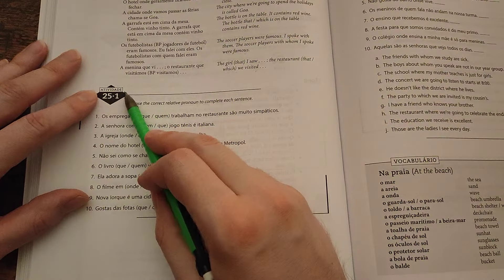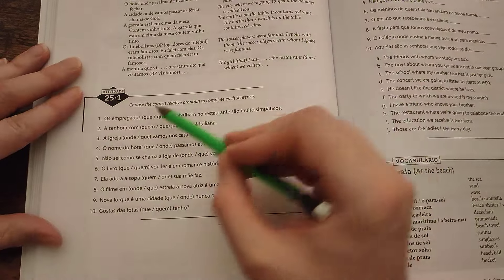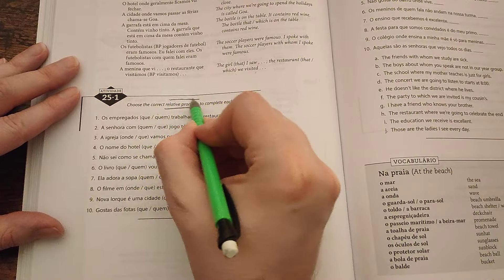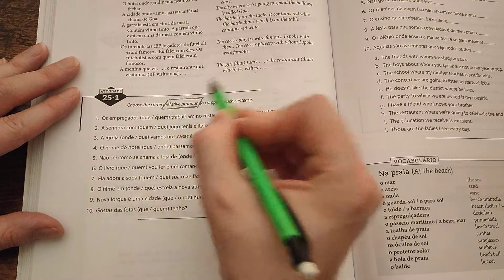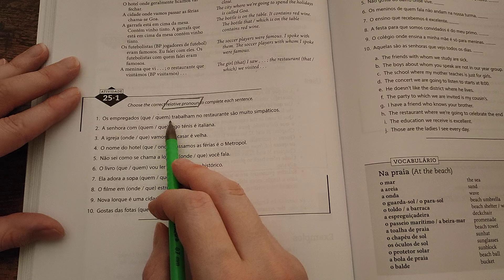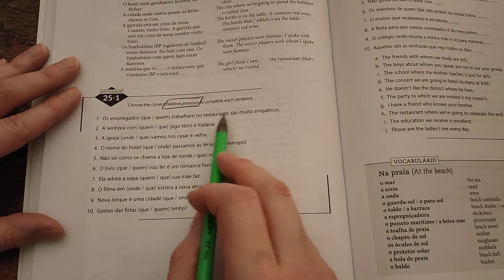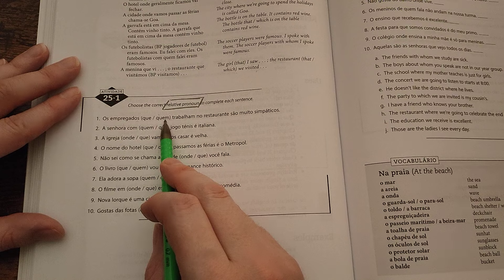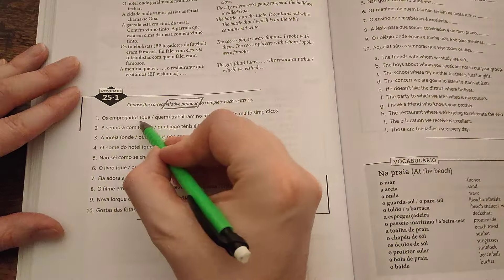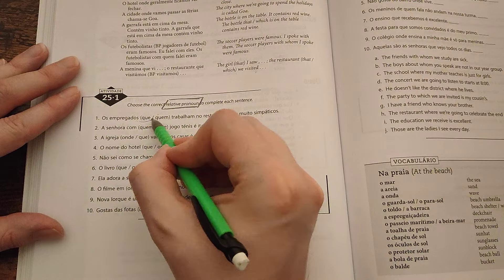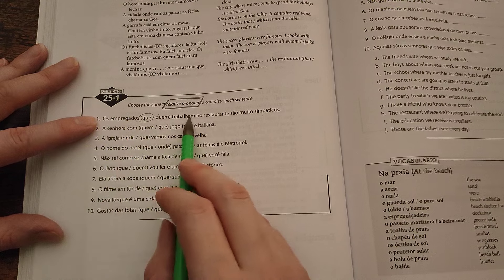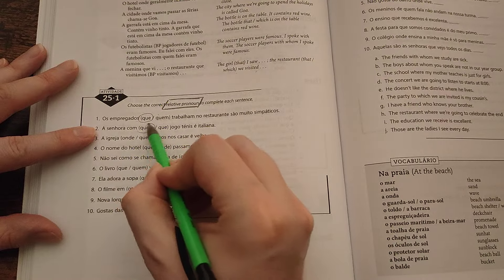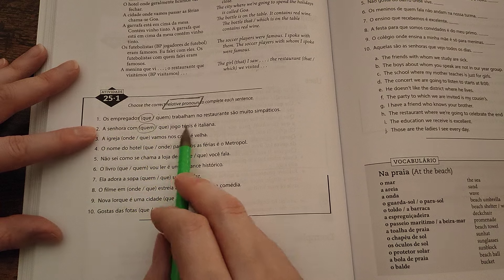Ok, vamos a fazer a primeira atividade. Número vinte e cinco ponto um. Use the correct relative pronoun to complete each sentence. Os empregados que trabalham no restaurante são muito simpáticos. The workers who work in the restaurant are very nice. A senhora com quem joga tênis é italiana. The lady with whom I play tennis is Italian.